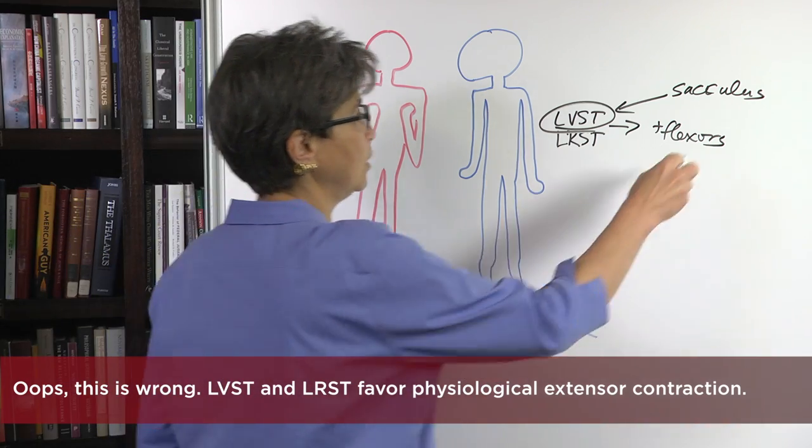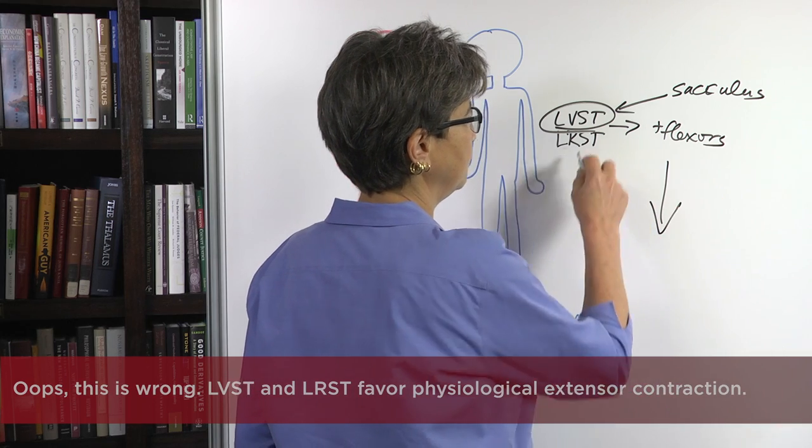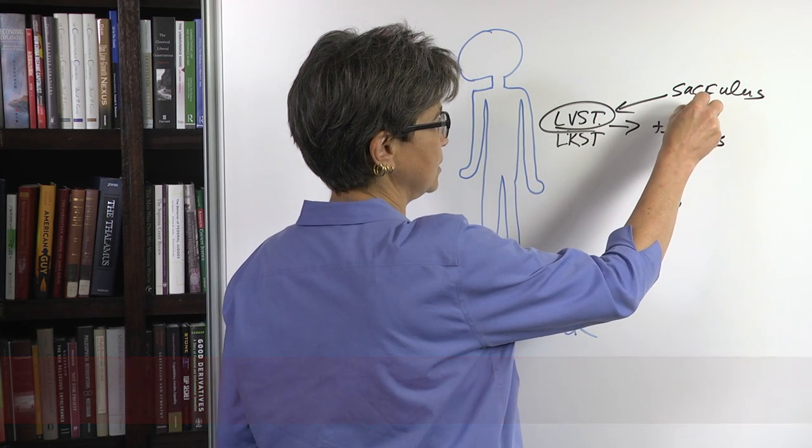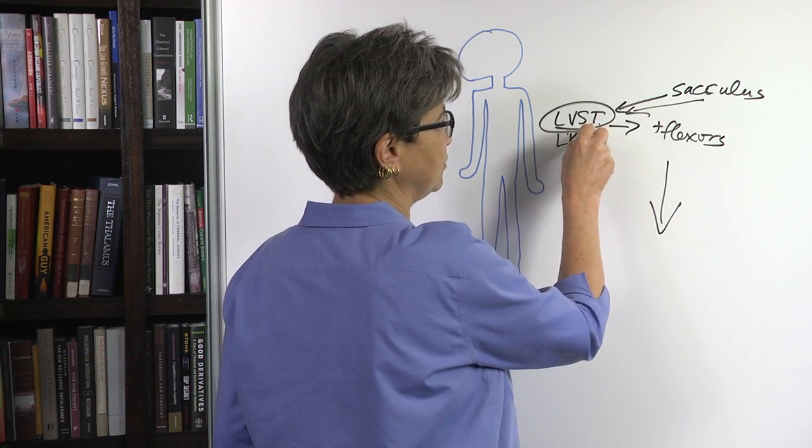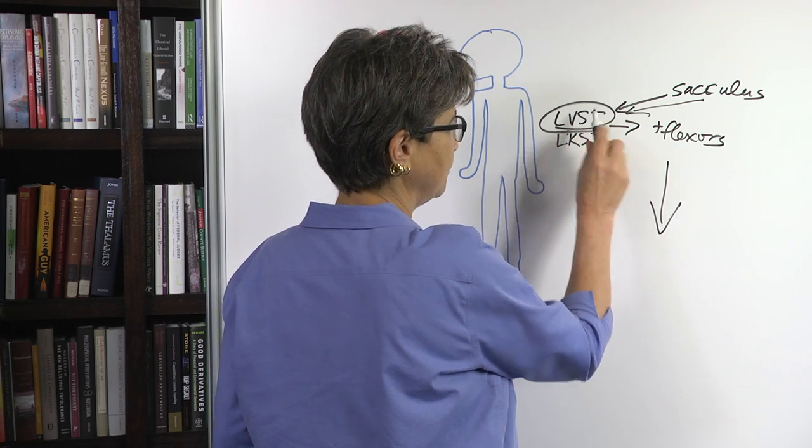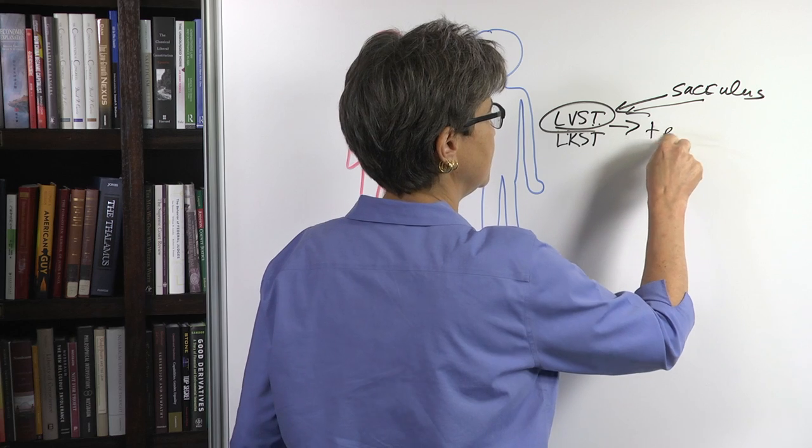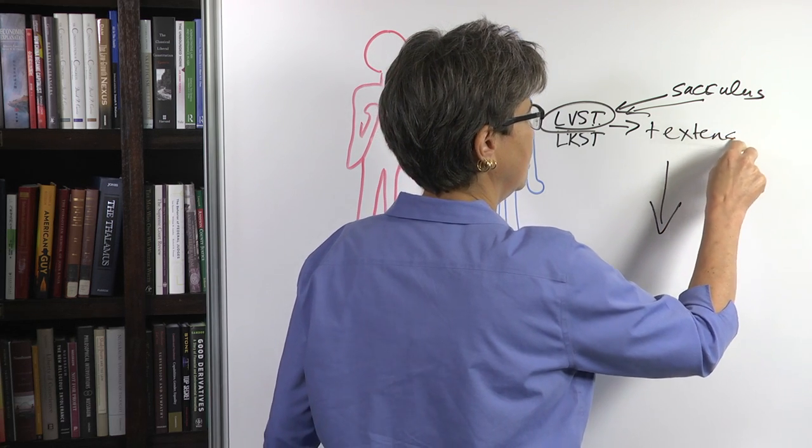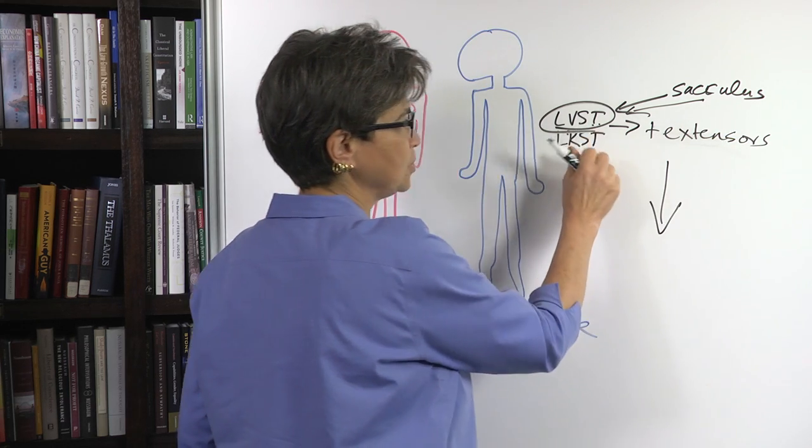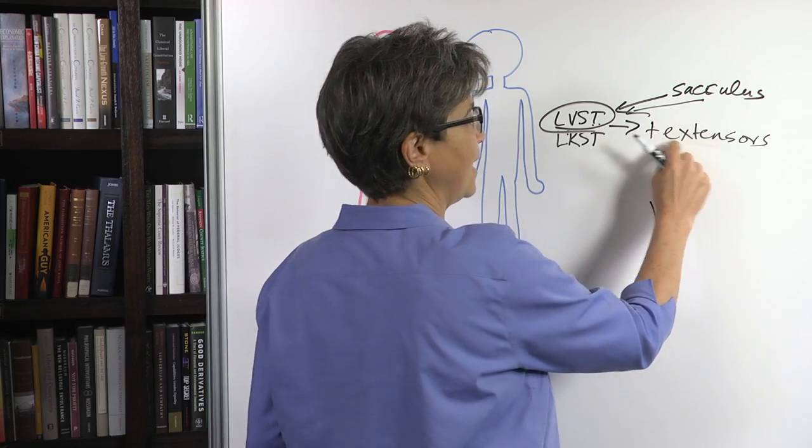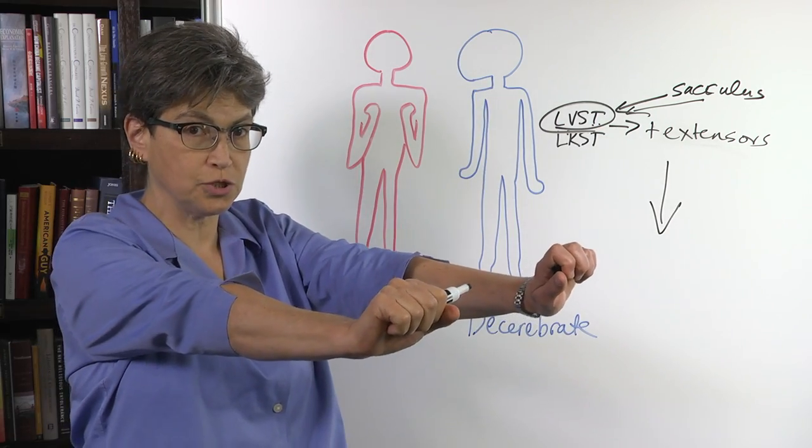Okay? So if a person is falling, the sacculus is excited. It excites the lateral vestibular spinal tract. Oh, I said that completely wrong. This is going to excite extensors. Sorry about that. The lateral vestibular spinal tract is excited. And that gives you this extensor posture.